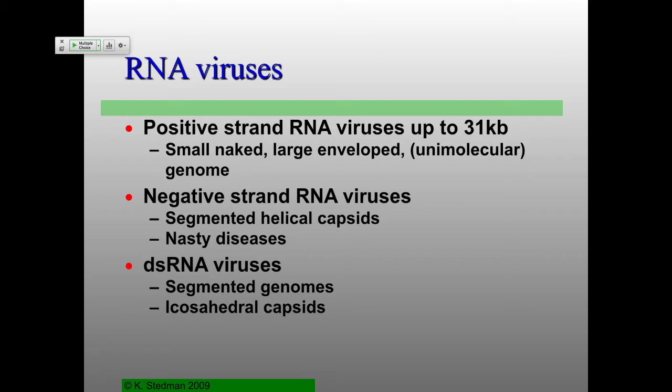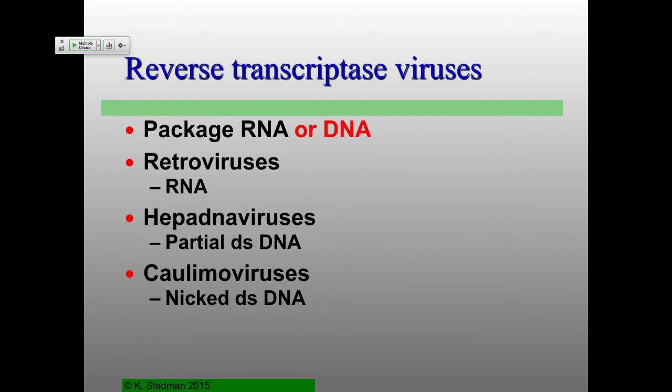There are a number of double-stranded RNA viruses that unfortunately we're not going to have much chance to talk about this term. These guys very often also have segmented genomes — multiple kinds of chromosomes — and mostly icosahedral capsids.